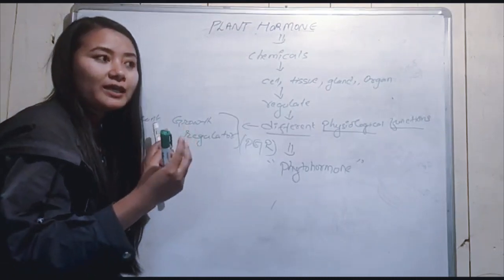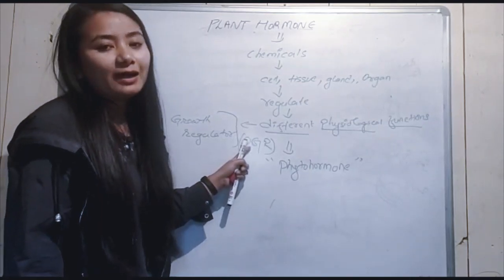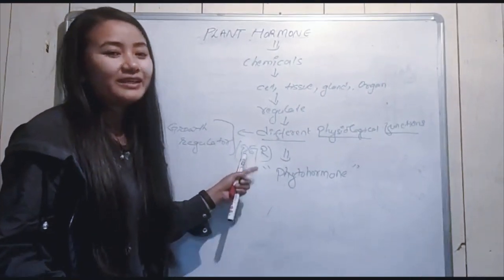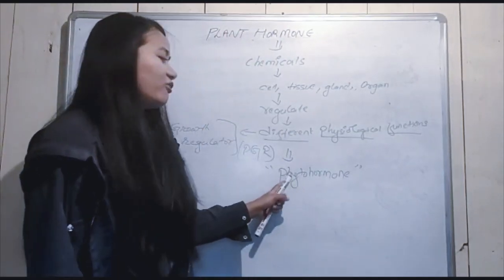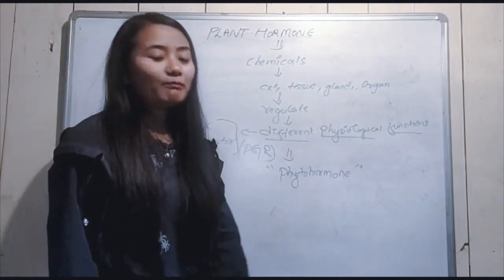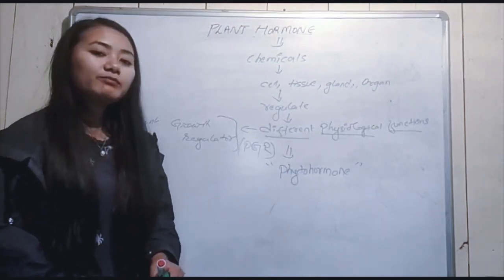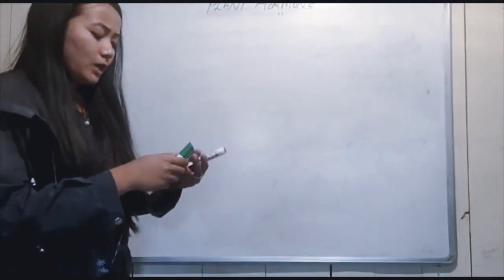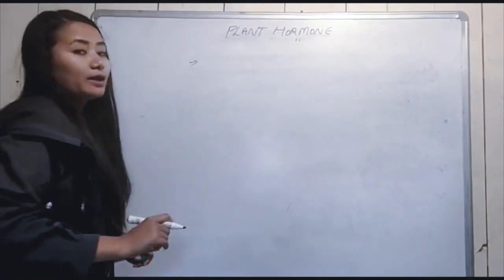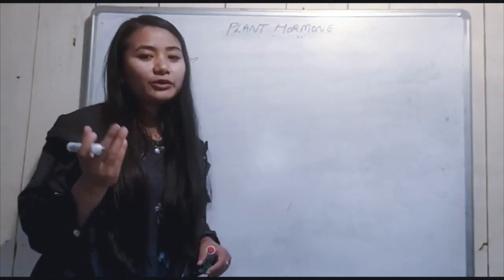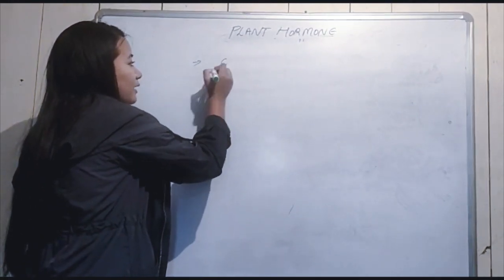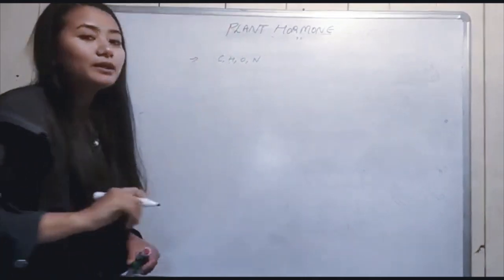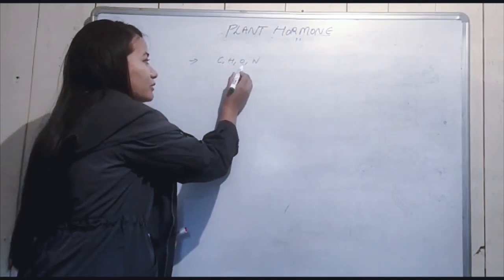That is why we call it PGR — Plant Growth Regulator. The hormone found in plants is called a phytohormone. Now let's look at the characteristics of phytohormones. Number one: phytohormones are made up of carbon, hydrogen, oxygen, and nitrogen. It is a complex molecule.